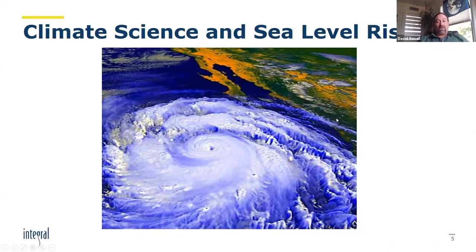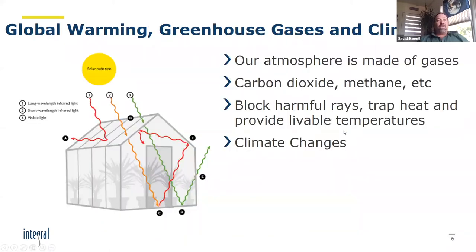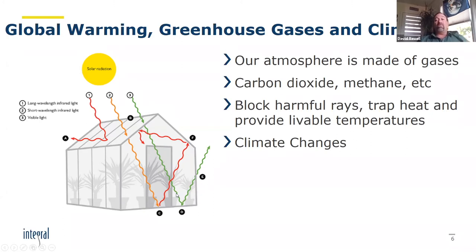I'm going to jump into some very basic climate science and how it affects sea level rise. We have a greenhouse effect because our atmosphere is made of gases. The sun comes in and can either bounce off the top of the atmosphere and get reflected out, be absorbed into the earth and warm it, or re-radiate within the atmosphere. Gases like carbon dioxide, methane, nitrous oxide, and ozone are really important for protecting us from solar radiation while keeping temperatures in a manageable range.